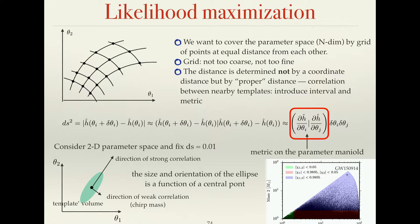The distance between points on this grid is not a coordinate distance, because we already introduced an inner product which is a measure of correlation between signals. In our case it's also a measure of correlation between points in parameter space. We introduce this distance squared — basically a measure of the distance between two templates, normalized, at nearby points in parameter space.